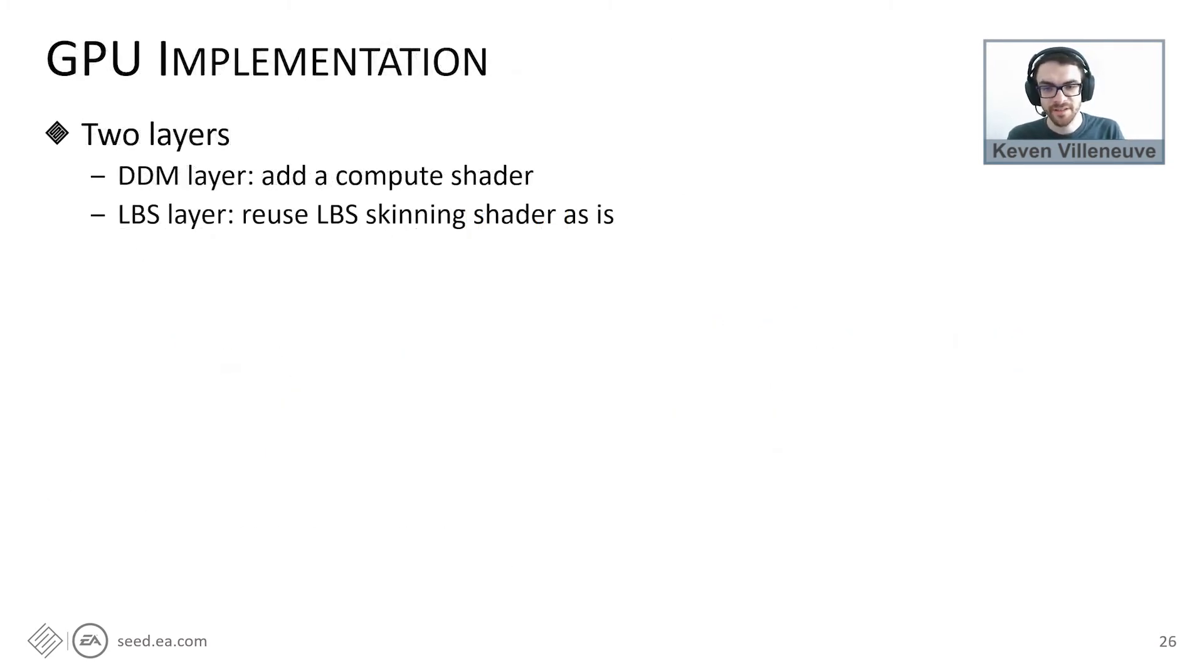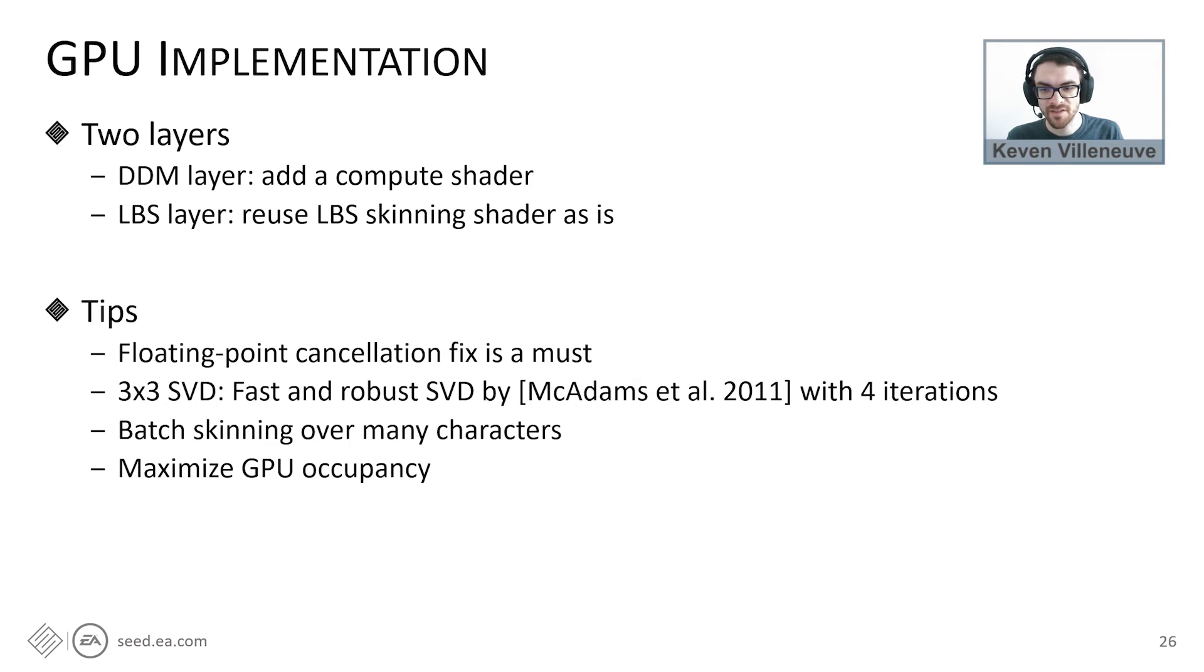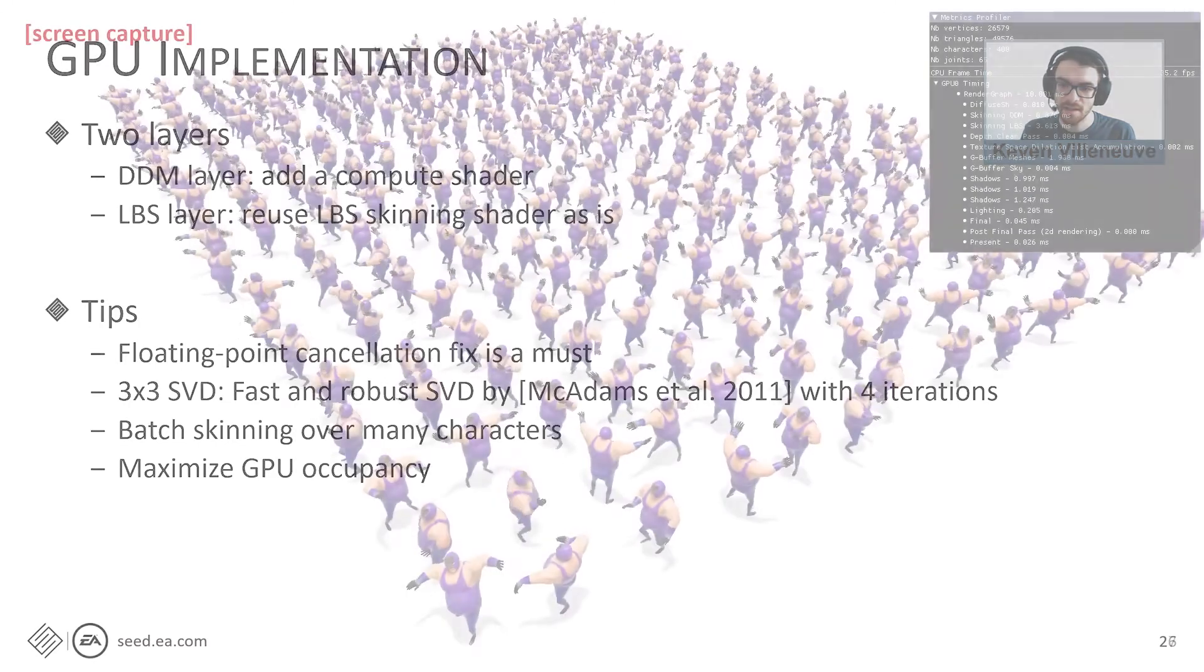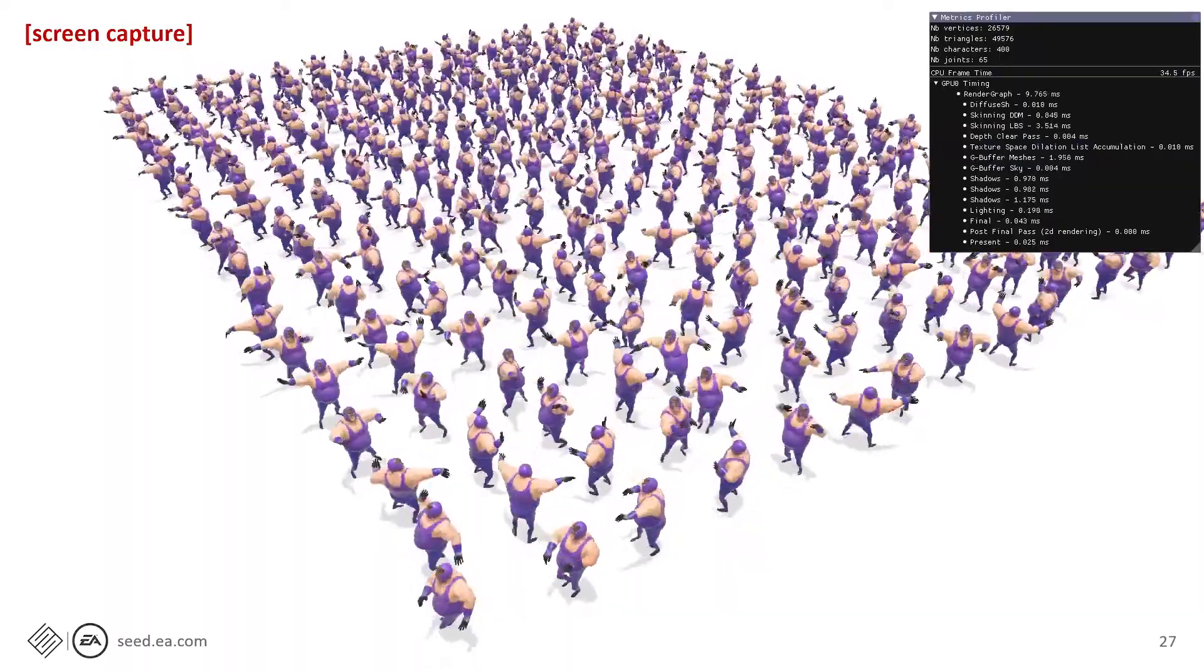I will now go into more details about the GPU implementation. Implementing our method in the game engine is straightforward. The DDM layer can be efficiently implemented as a compute shader, while the LBS layer can reuse the same shader already available in the game engine. For the 3x3 SVD, we use the fast and robust method proposed by McAdams and colleagues with four iterations. In order to obtain the best performance and to maximize GPU occupancy, we batch skinning on many characters. Here is the screen capture of our implementation running in real-time.